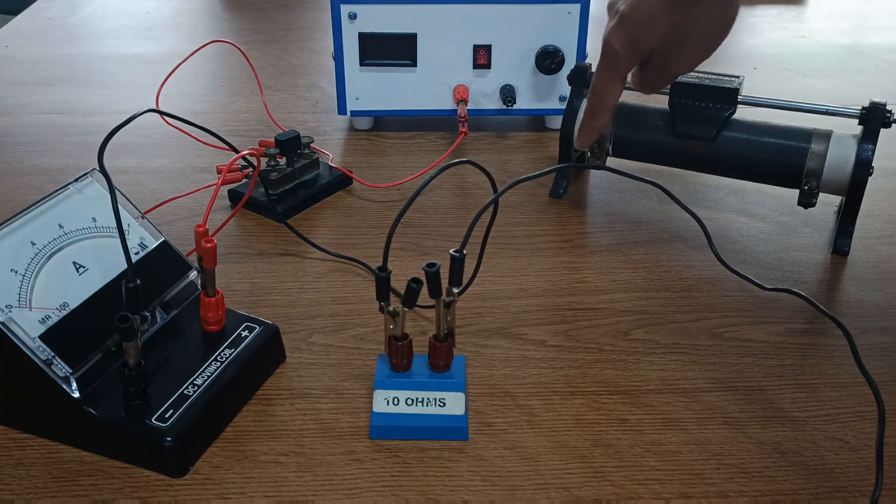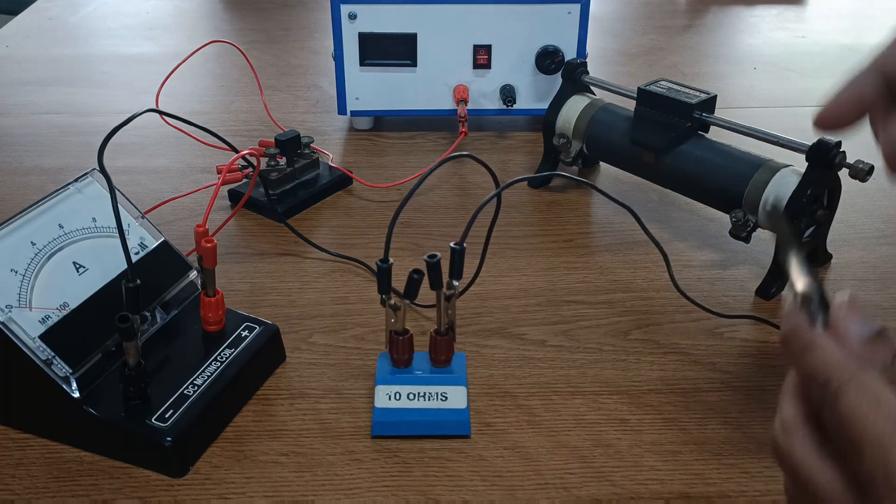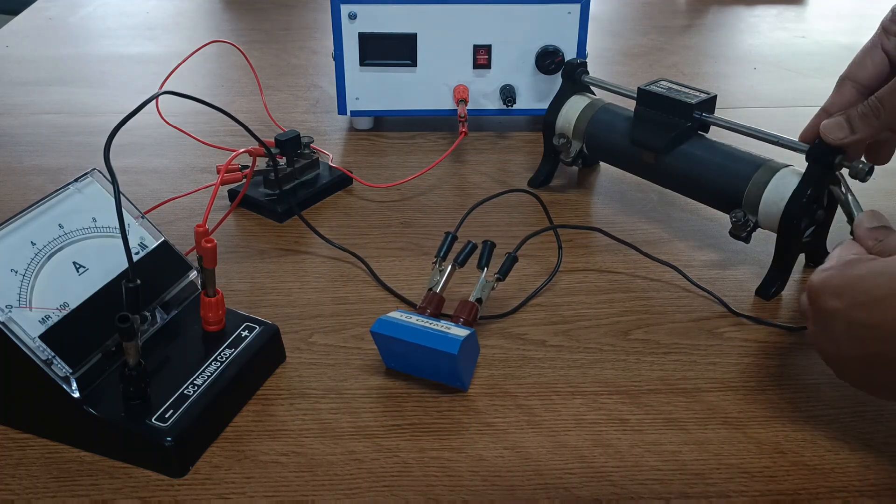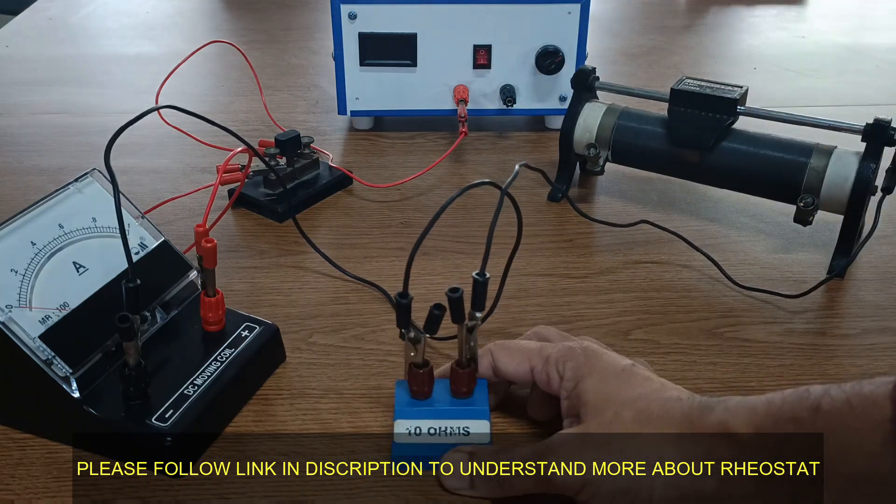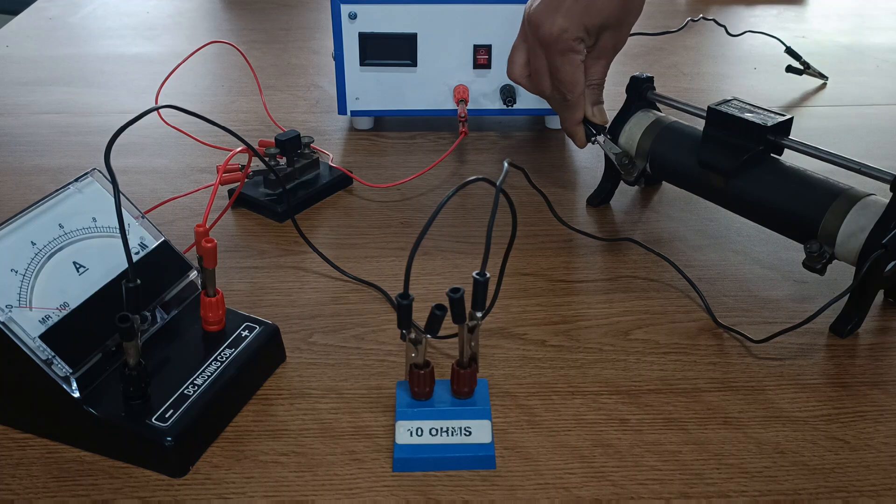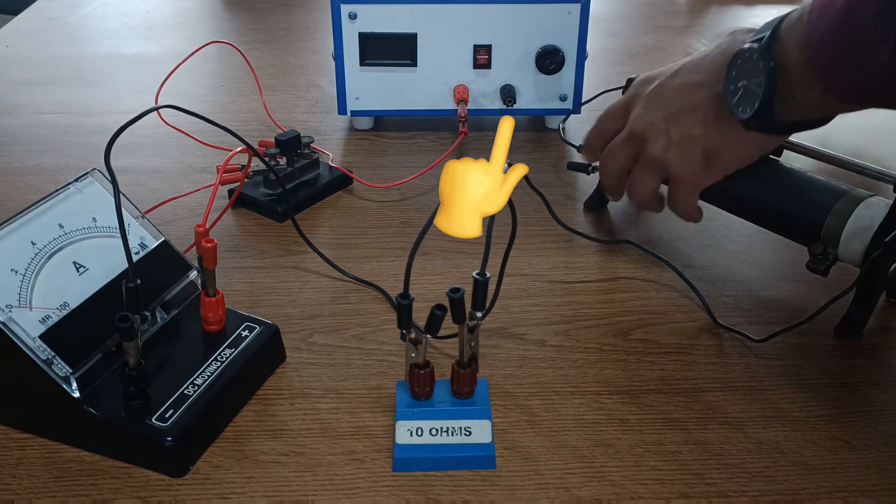Please note there are three terminals of the rheostat. Do connect only those terminals as shown in the video. The other end of the rheostat terminal is to be connected to the negative terminal of the battery which is black in color.